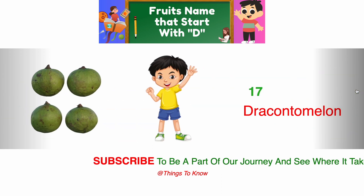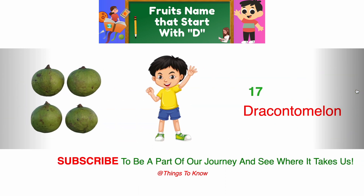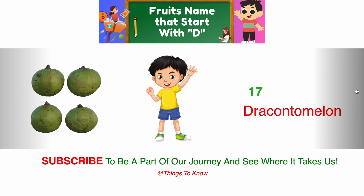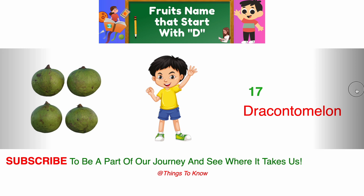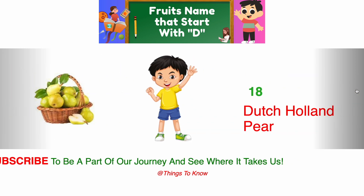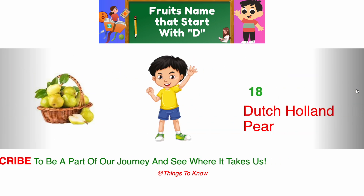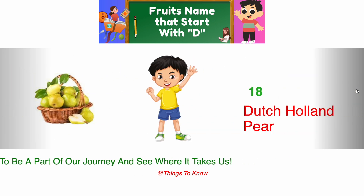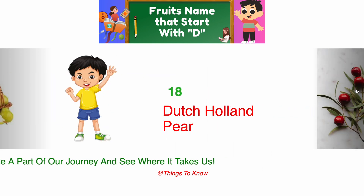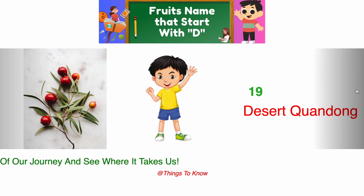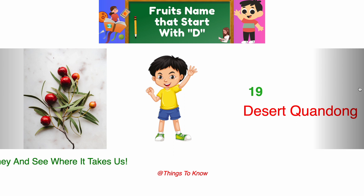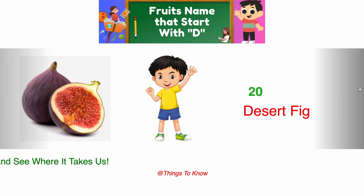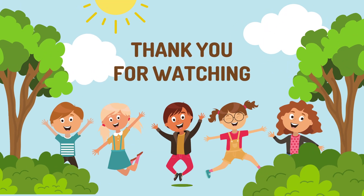17. Drakon Tomellon. 18. Dutch Holland Pier. 19. Desert Guangdong. 20. Desert Figs. Thank you.